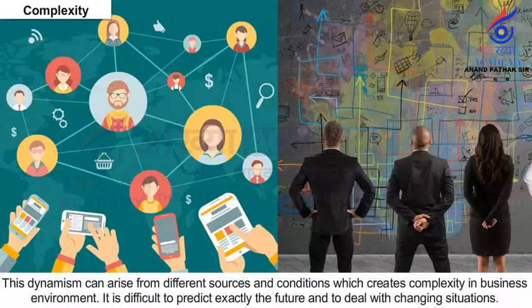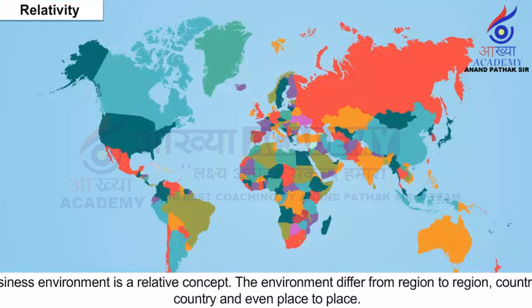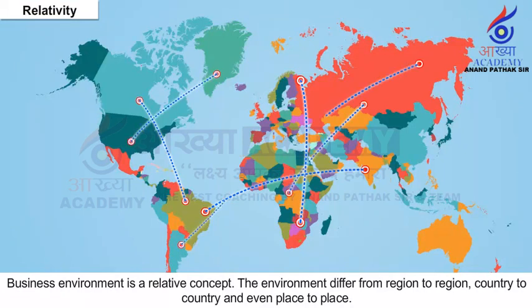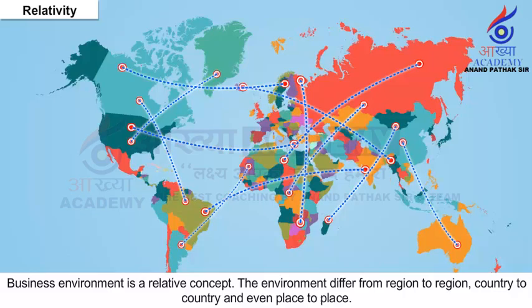Complexity: Business environment is interconnected and keeps its dynamism always. This dynamism can arise from different sources and conditions which creates complexity in the business environment. It is difficult to predict exactly the future and to deal with changing situations. Relativity: Business environment is a relative concept. The environment differs from region to region, country to country and even place to place.